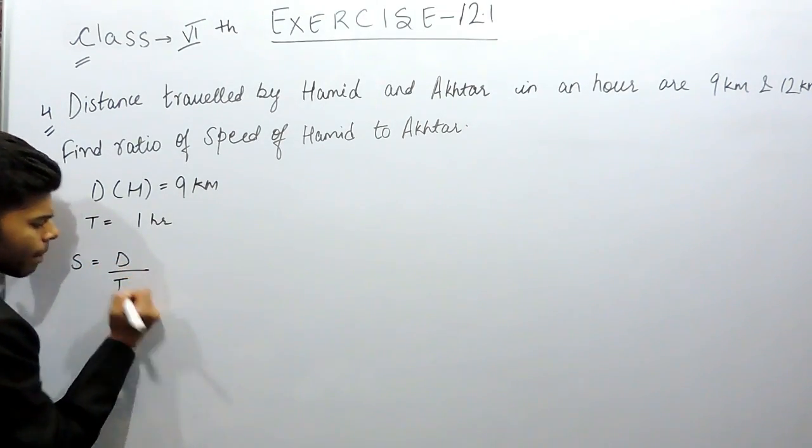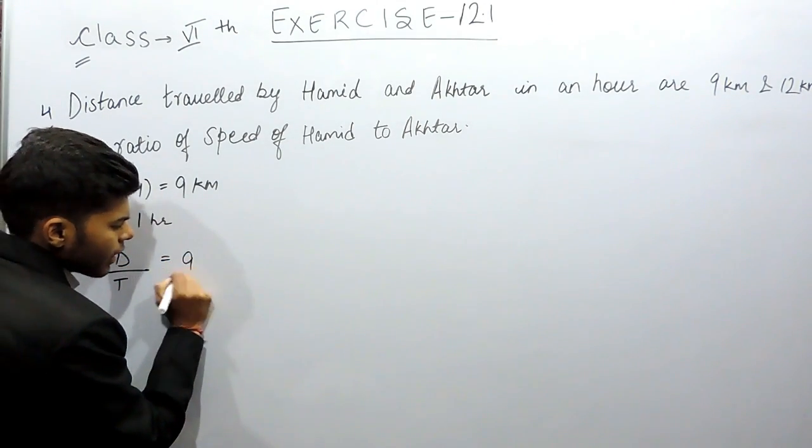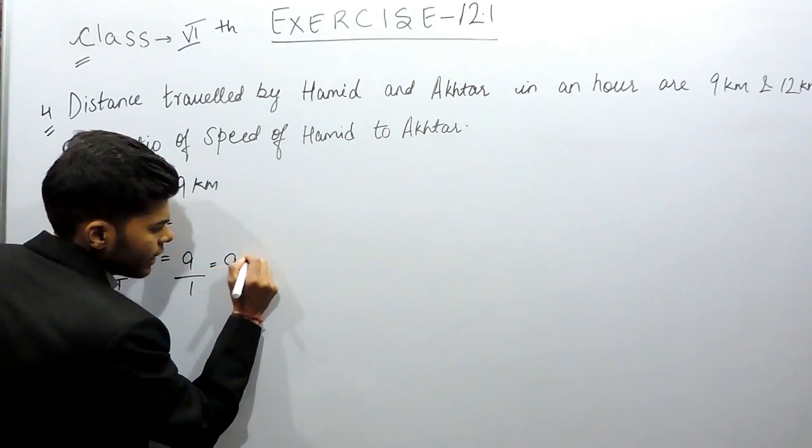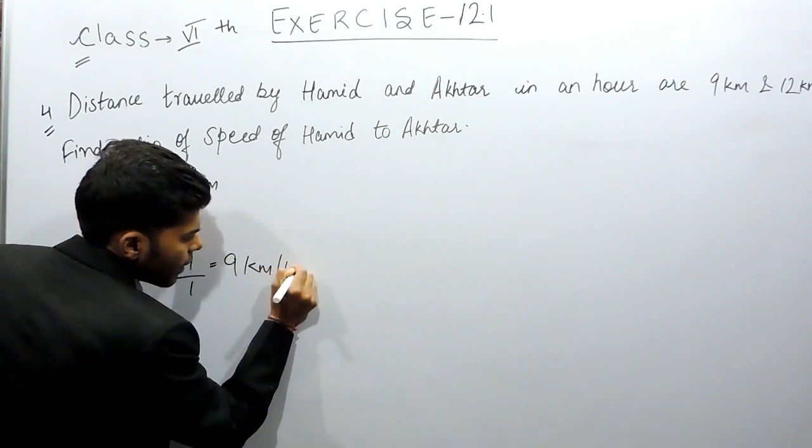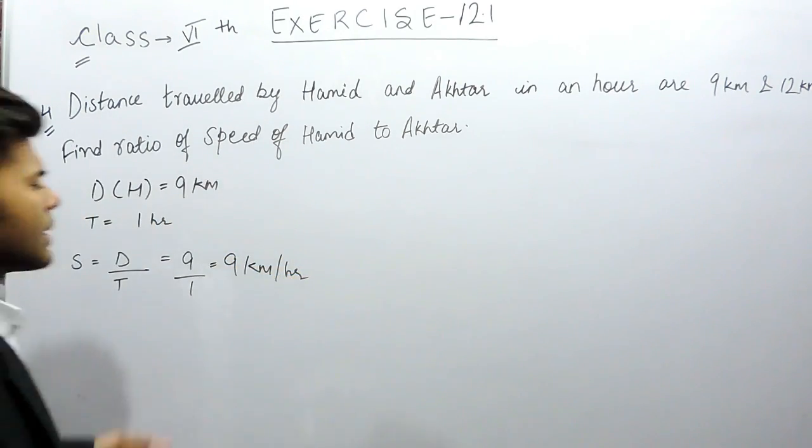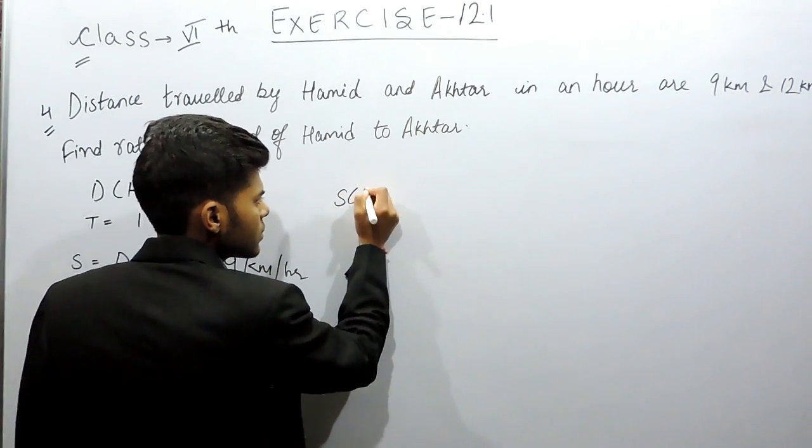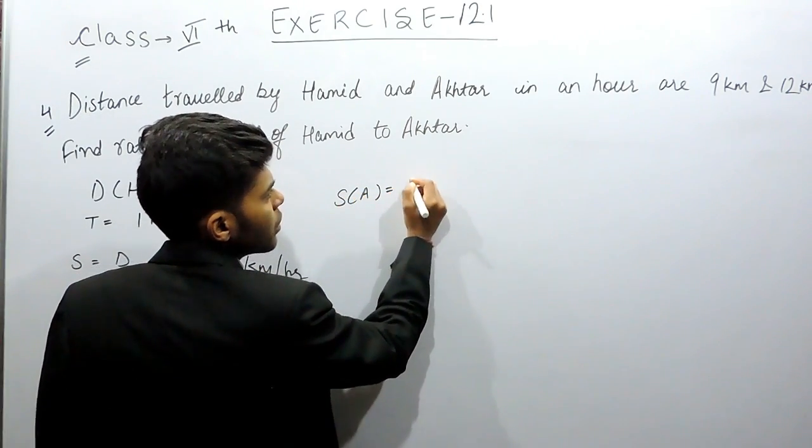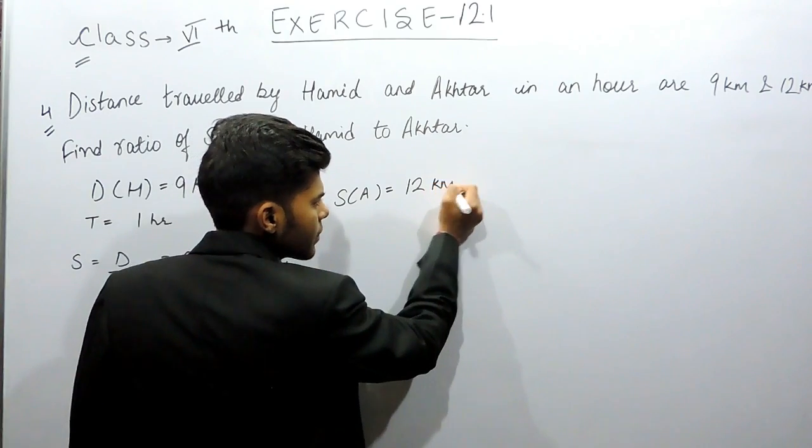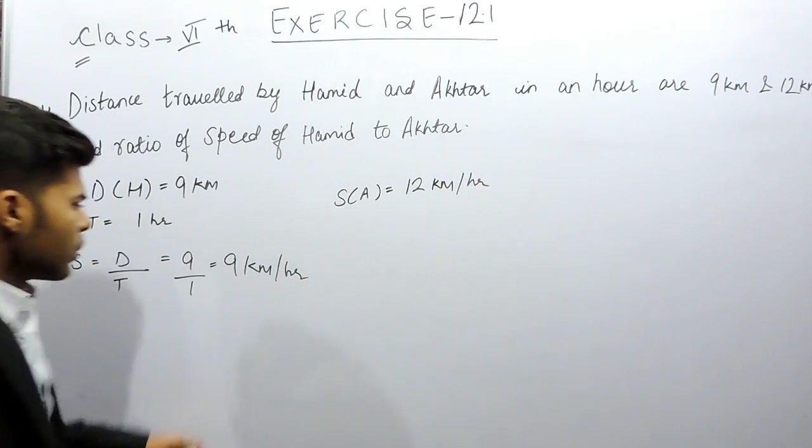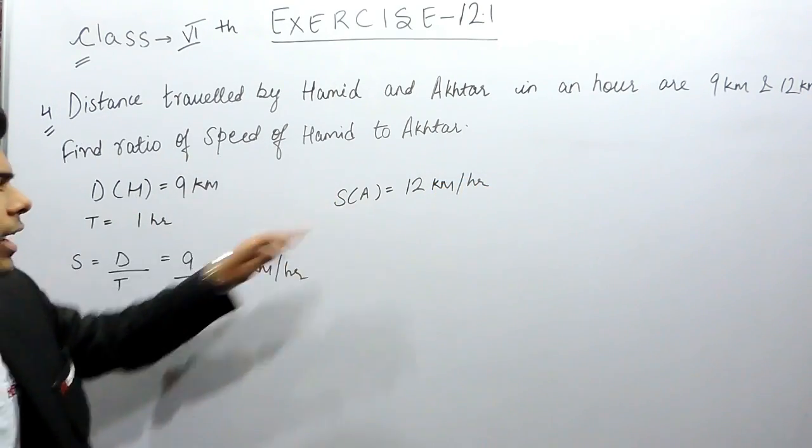distance upon time, that will be 9 upon 1, equals 9 kilometers per hour. Similarly, the speed of Akhtar will be equal to 12 kilometers per hour using the same calculation.